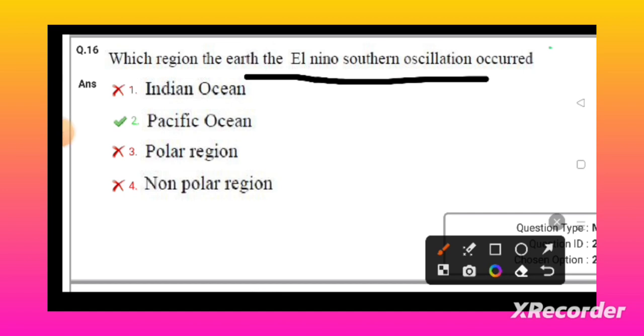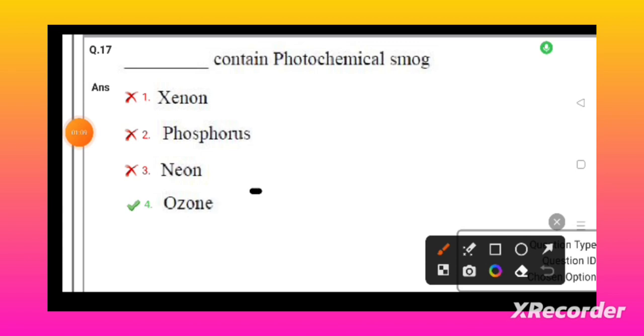The Southern Oscillation of the El Niño occurs in the Pacific Ocean. The ozone-containing photochemical smog is made of ozone.